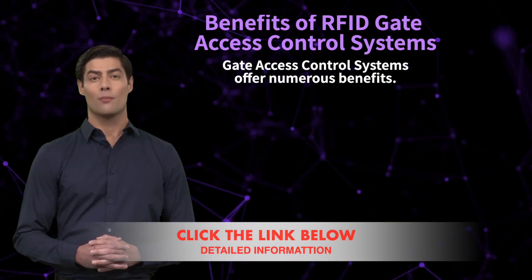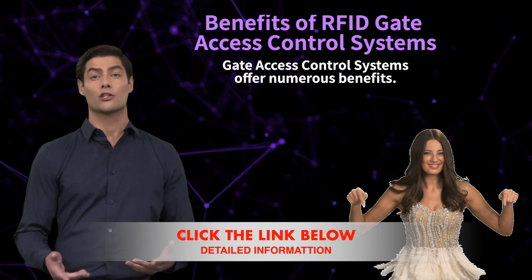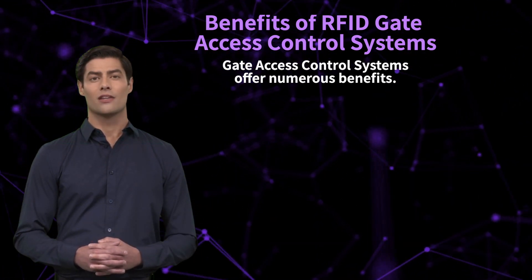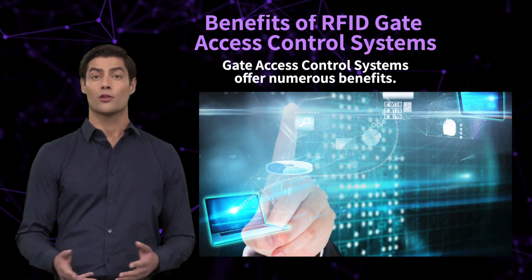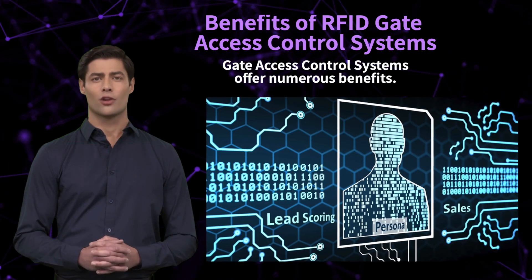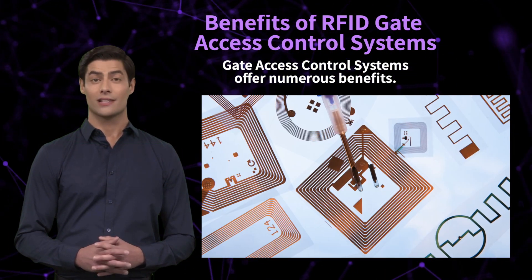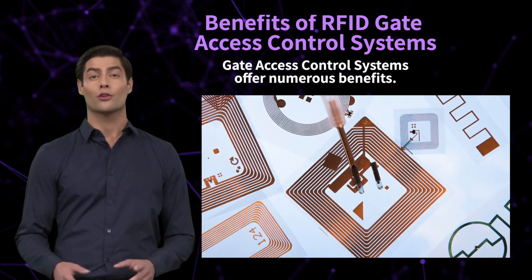The operation of an RFID gate access control system involves the following steps. Identification: when an individual or object approaches the gate or entry point, they present their RFID tag or card to the RFID reader.